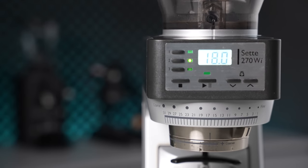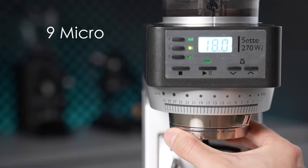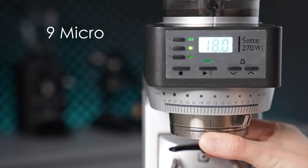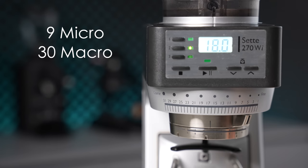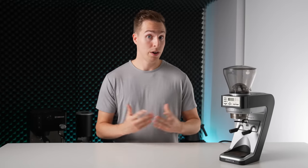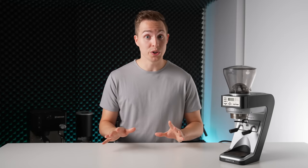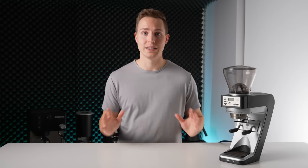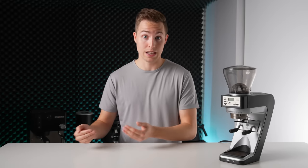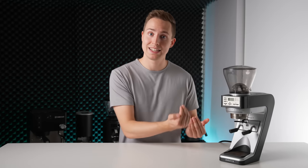The Sette 270 solves this problem by adding a micro adjustment ring. Nine steps of micro adjustment in between each of the existing 30 macro steps results in a combined 270 steps, hence the name. And although the coffee community likes to frown upon stepped grinders, I can assure you these steps are plenty small enough to use in an effectively stepless way.